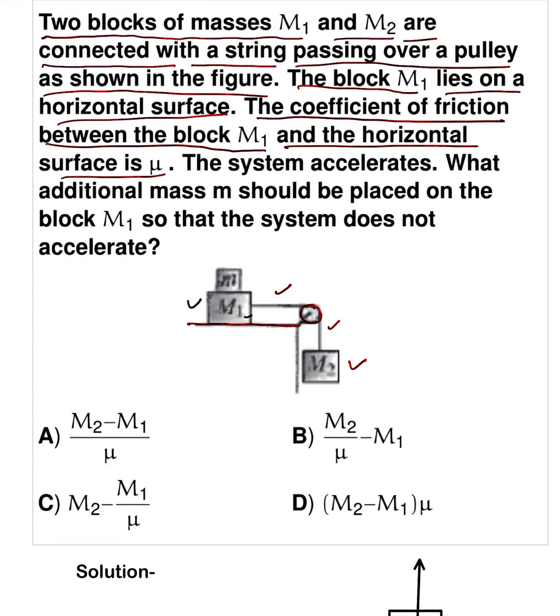The system accelerates. What additional mass m should be placed on the block M1 so that the system does not accelerate? If the whole system is at rest, how much mass should we put here?